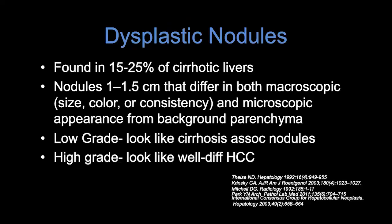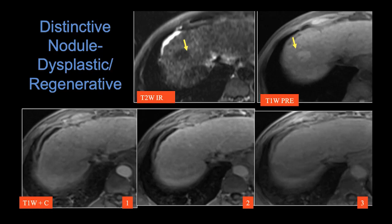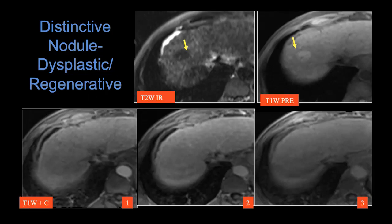Dysplastic nodules are found in up to a quarter of patients, and they are different both macroscopically and microscopically from the background parenchyma. If they're low-grade, they look just like cirrhosis-associated nodules. If they're high-grade, they can look just like well-differentiated HCC. Usually they're iso-intense on T1 and T2. They may have fat, some retain copper and can have increased signal intensity on T1. They should not have increased signal intensity on T2 and should not show arterial phase enhancement. Here we have a distinctive nodule — it's a little different than its neighbor, slightly darker on T2 and slightly brighter on T1 — but its enhancement pattern is not really different. This is really a dysplastic or regenerative nodule.